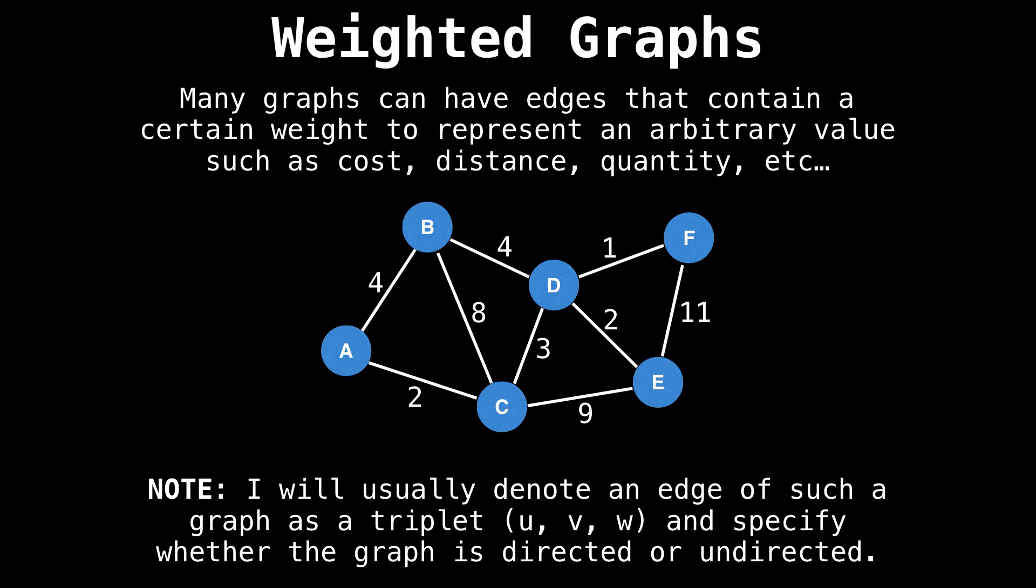So far we've only seen unweighted graphs, but edges on graphs can contain weights to represent arbitrary values such as cost, distance, quantity, you name it. Weighted graphs come in both directed and undirected flavors. As a side note, I will usually denote an edge of a graph as a triplet U, V, W to indicate where an edge is coming from, where it's going to, and what its weight is.